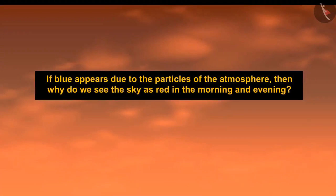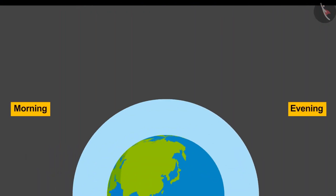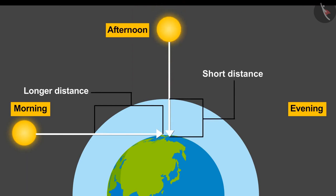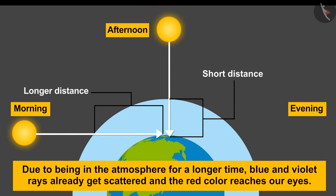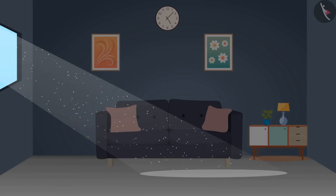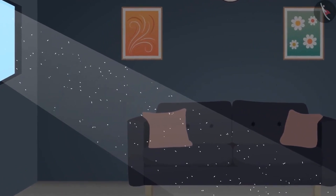If the sky appears blue due to atmospheric particles, why does it appear red in the morning and evening? At sunrise and sunset, the sun is near the horizon, so light from the sun travels through the atmosphere for a longer distance. In the afternoon, this distance decreases. Due to the longer path through the atmosphere, blue and violet rays get scattered away, and the red color reaches our eyes. These phenomena are all applications of the Tyndall effect — the scattering of light by colloidal particles in a medium. Sunlight streaming through a small opening in a dark room is another example of the Tyndall effect.